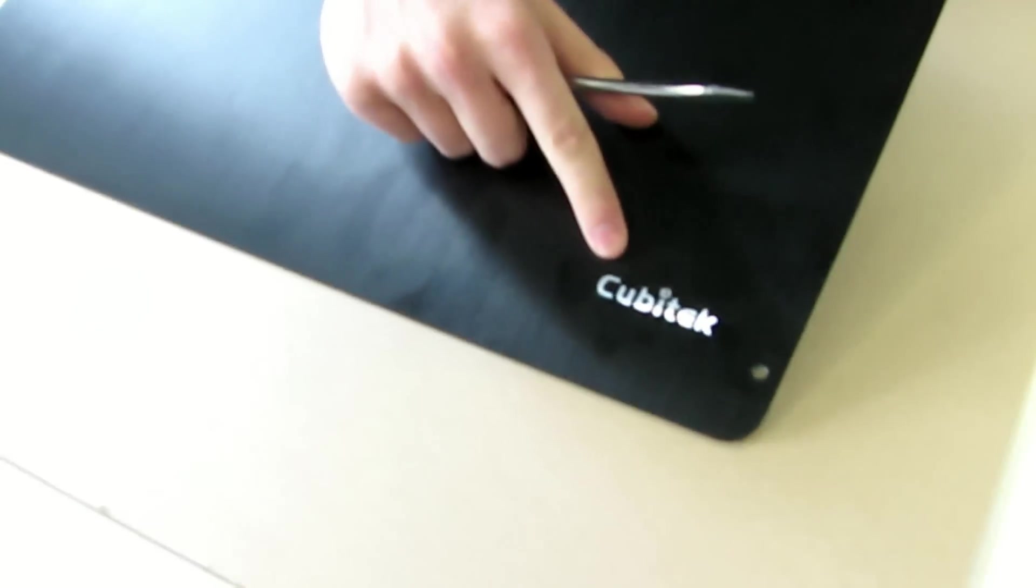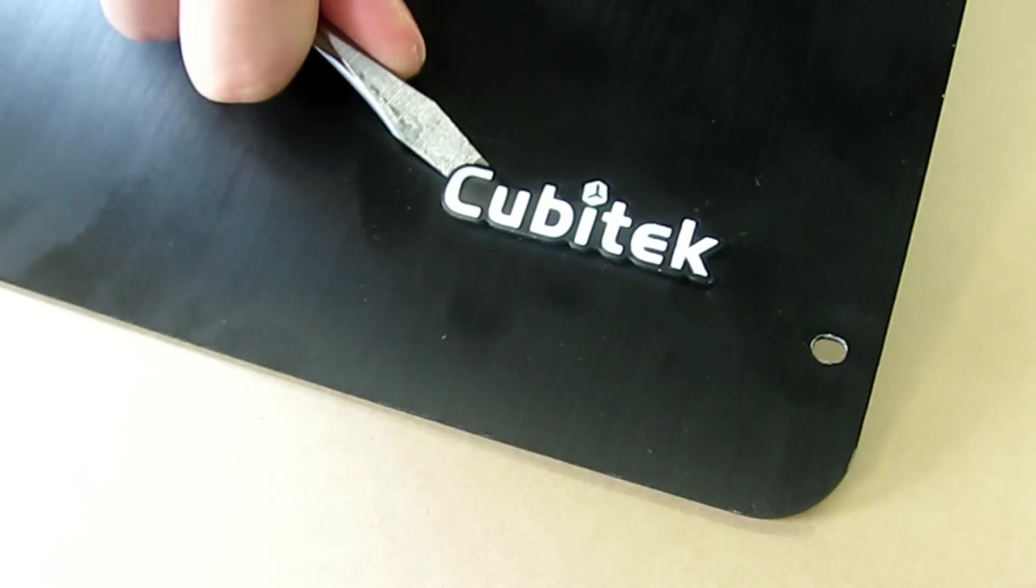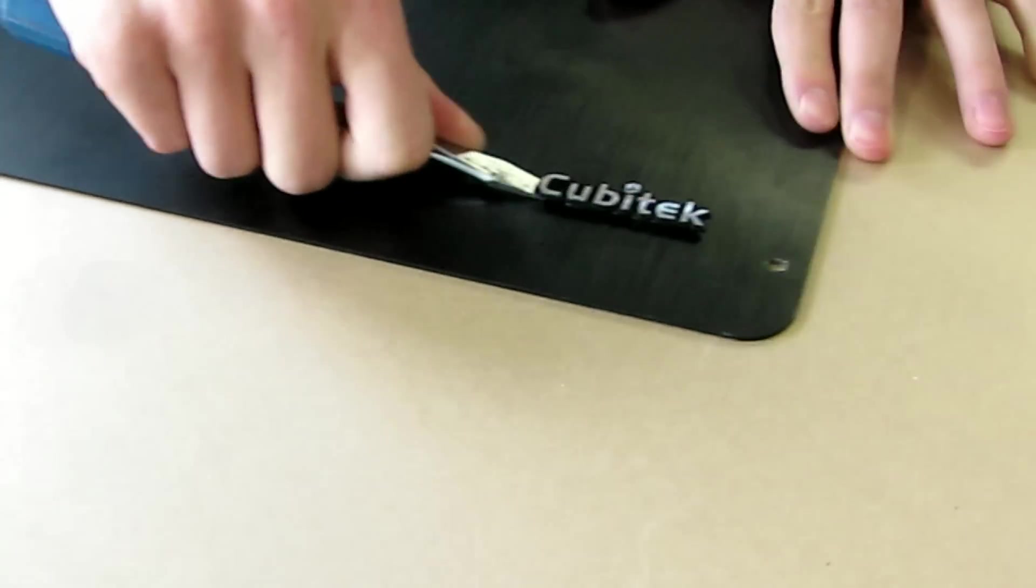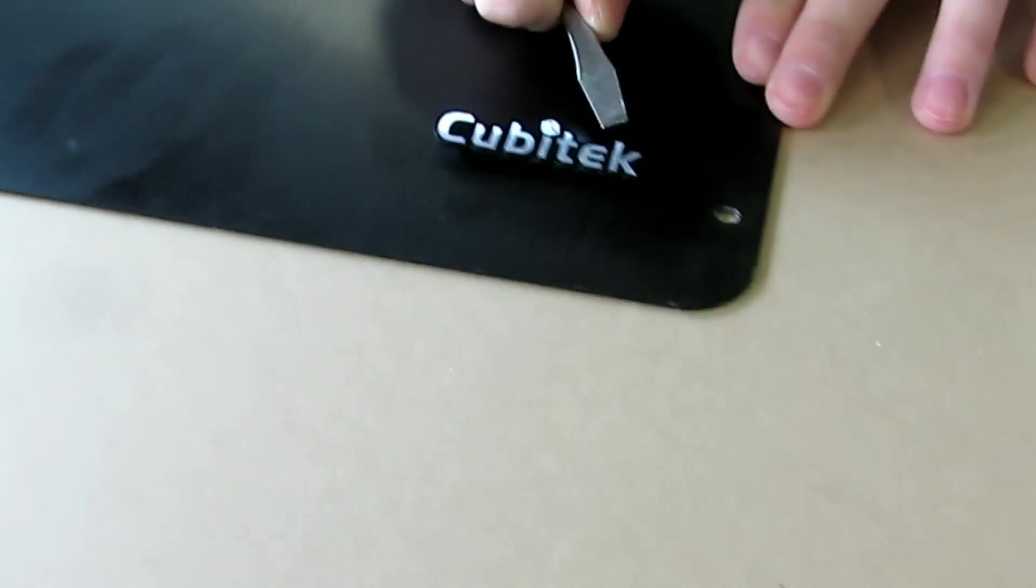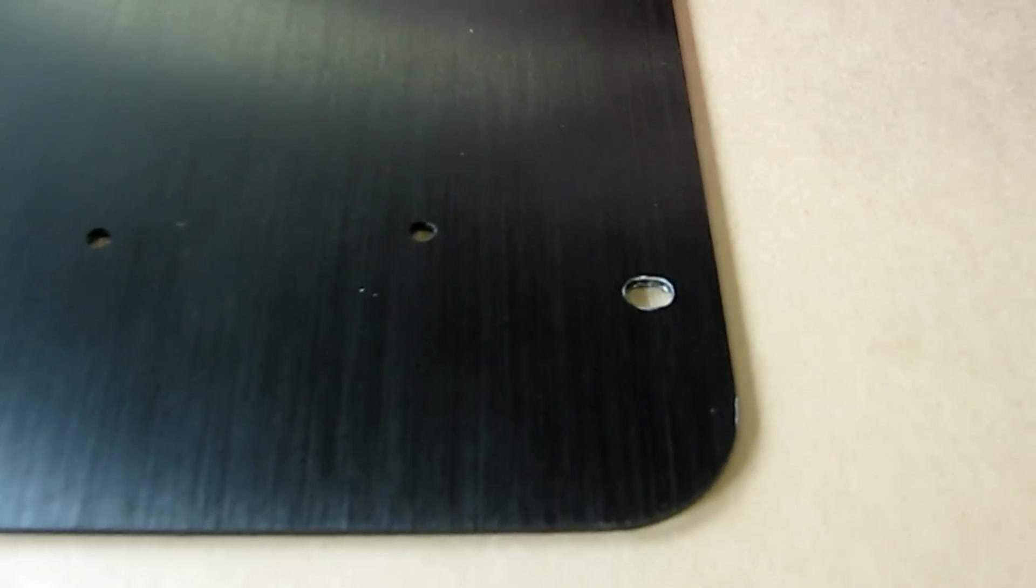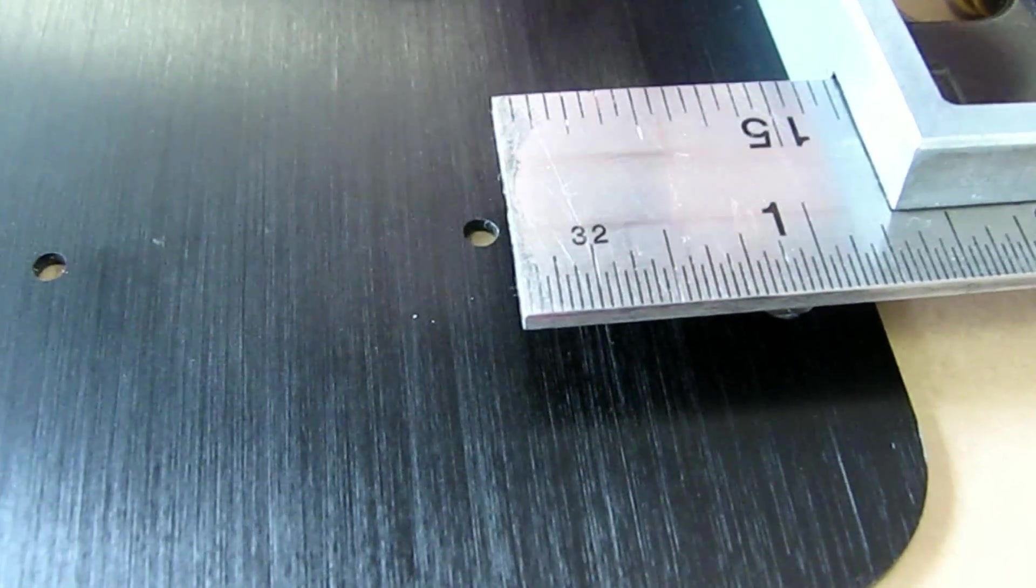We're looking at the side panel that we'll put the window in. We don't really like this Cubitech logo here, so I'm going to be popping that off. After we got the emblem off, you can see these two holes in the side panel. Instead of doing a workaround for this, we're going to line up the edges of the window to go right up to those holes.